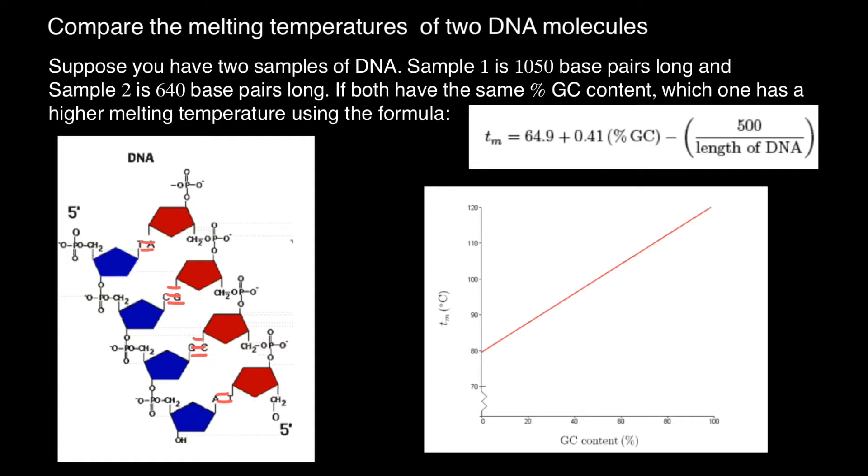So let's see. This is linear relationship. For example, if we have 20% of the GC content, the melting point is going to be about maybe 85. And for example, if we would have 60% of GC content, the melting point is going to be about 100 degrees Celsius.